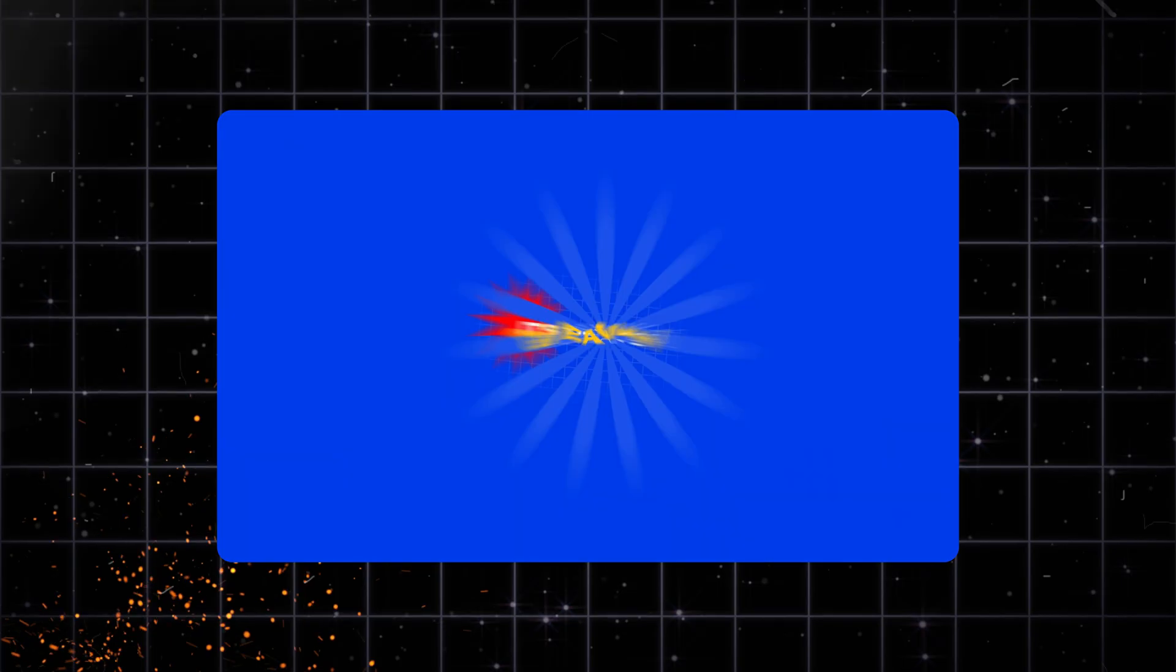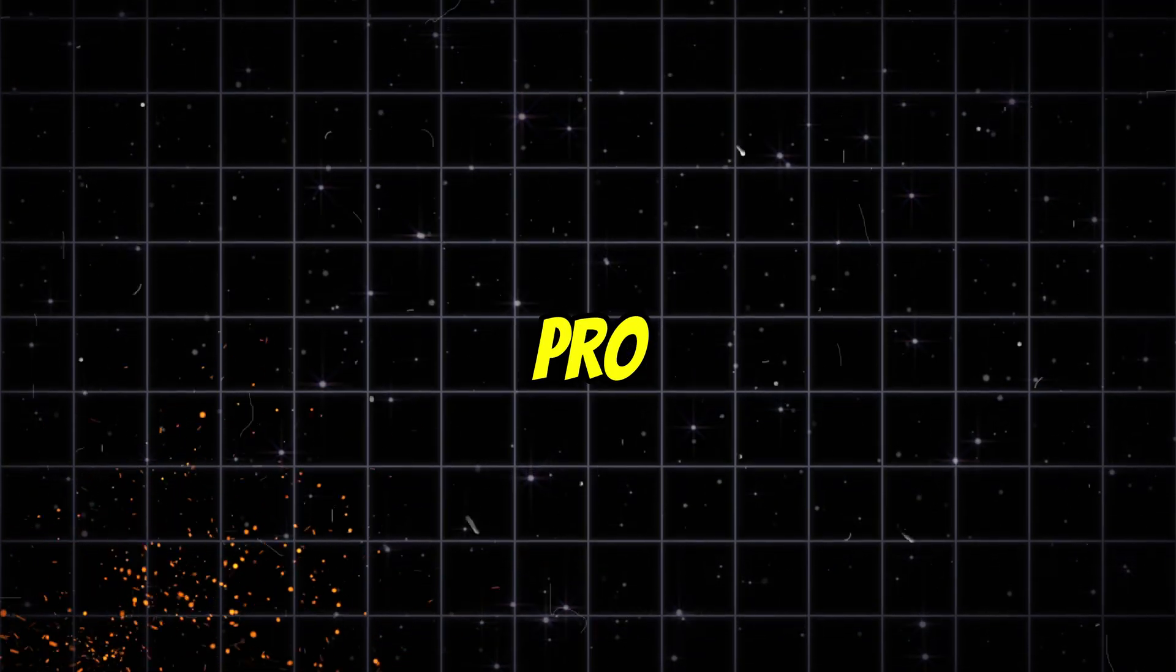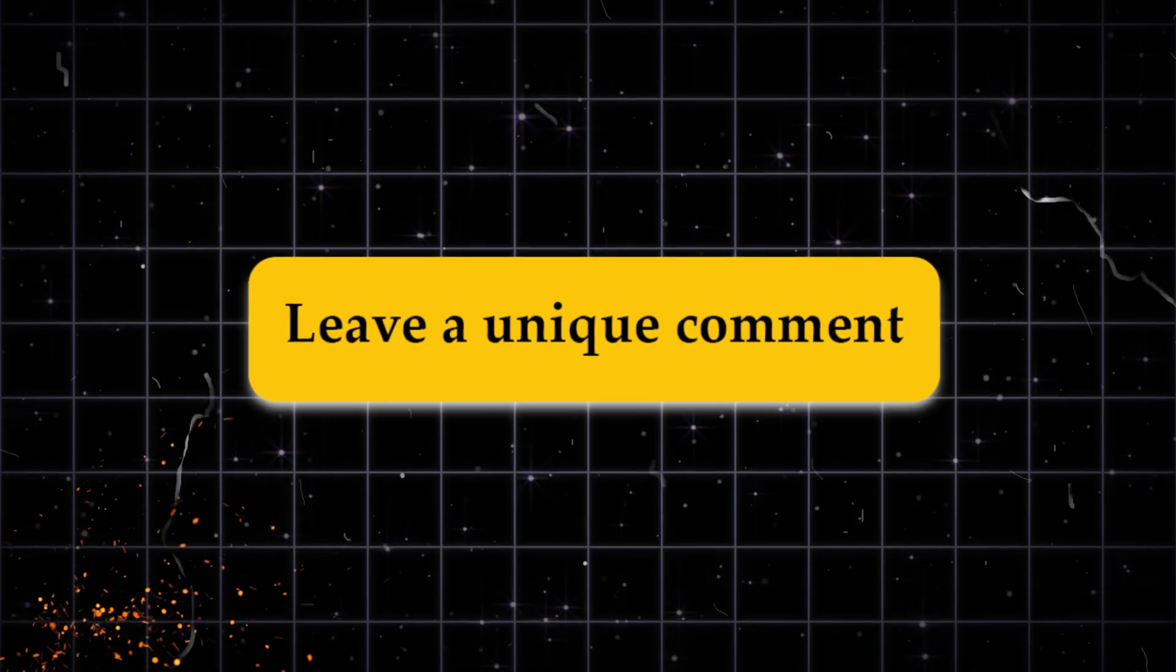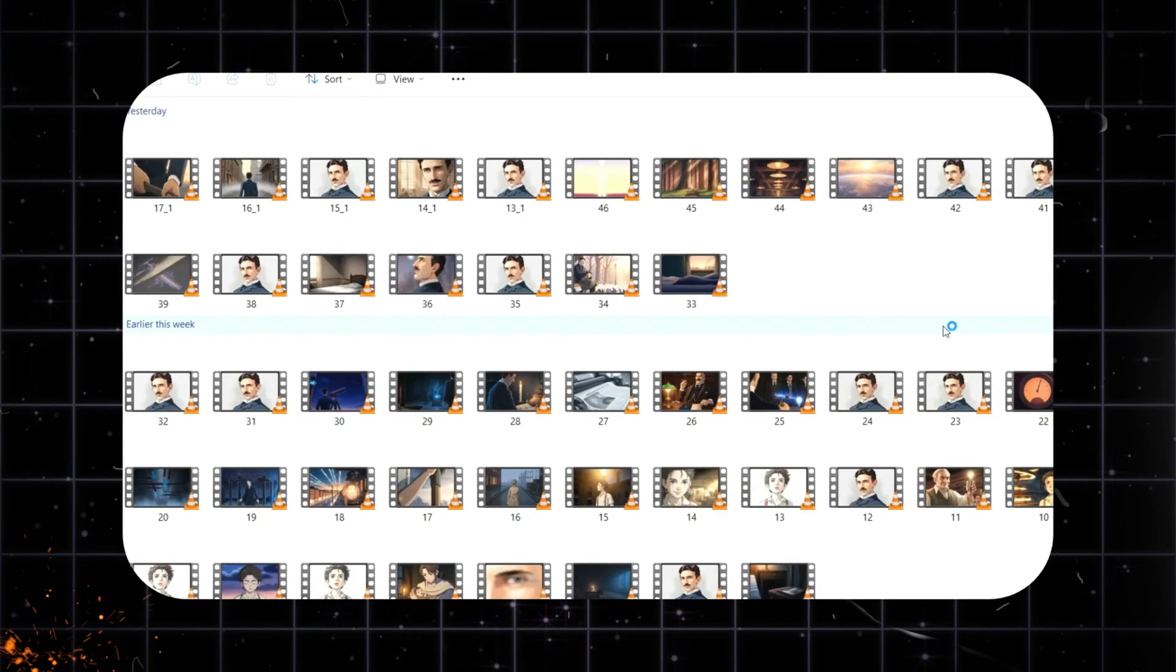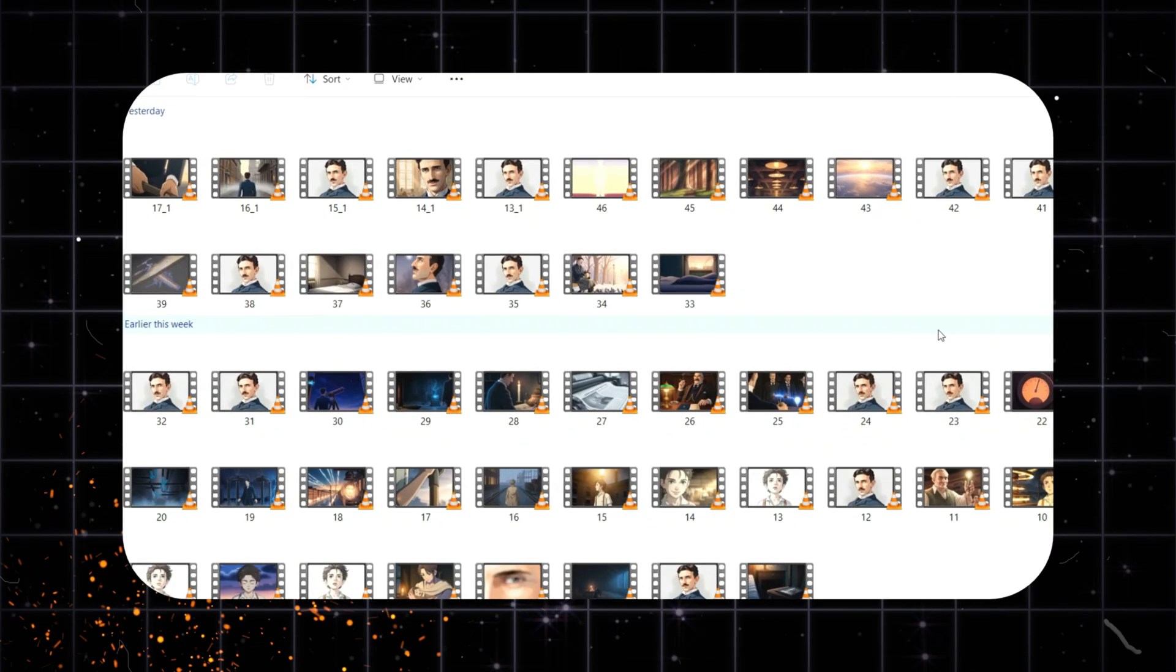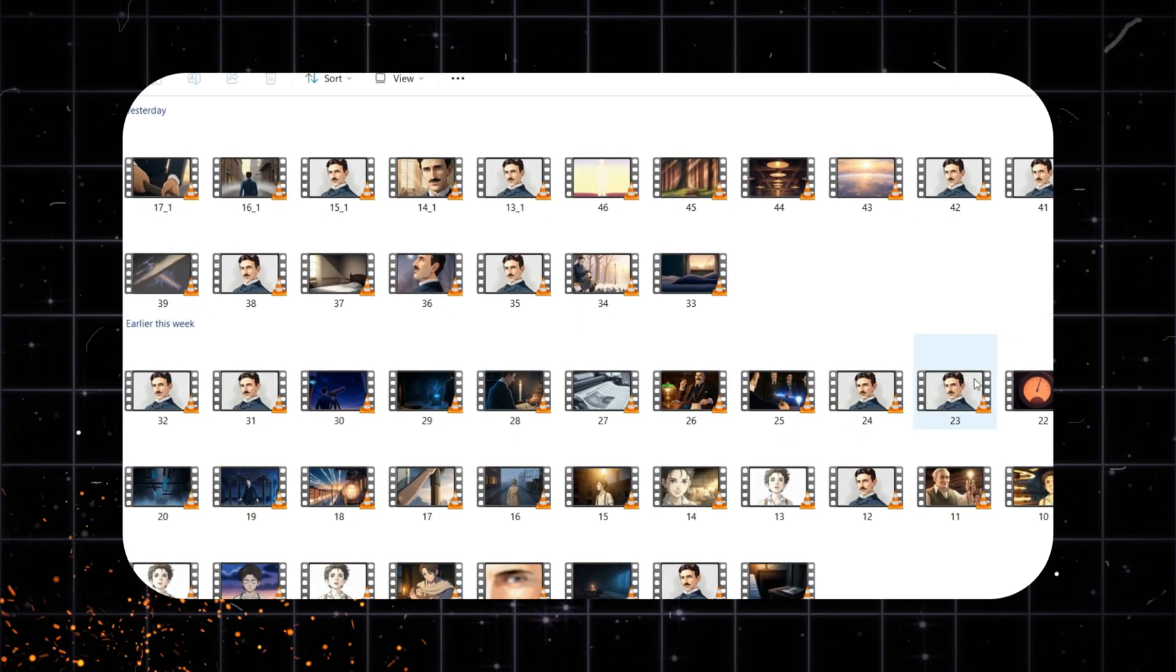And now comes the giveaway surprise I promised at the start of this masterclass. 5 viewers will win a Higgsfield Pro plan. To participate, simply leave a unique feedback comment about this masterclass. Entries close in 72 hours, and the winners will be announced right here in a community post. Once done, download all your clips. And congratulations, you now have every shot of your AI-generated 2D animation story.